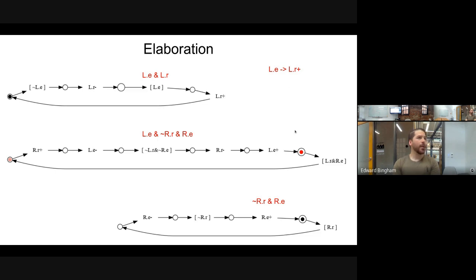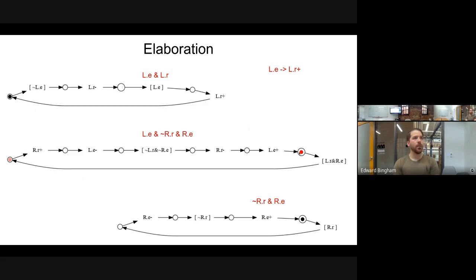The next enabled transition: L.R is now unknown (zero or one), R.E is known to be one, so we can pass through this guard and drive R.R high. This is the only transition enabled because R.R and R.E haven't changed yet for the other token — we're still waiting for L.E to be low. Executing this transition, R.R goes high, and we verify the communicating process's transition has reached the buffer — now we know L.R is high.